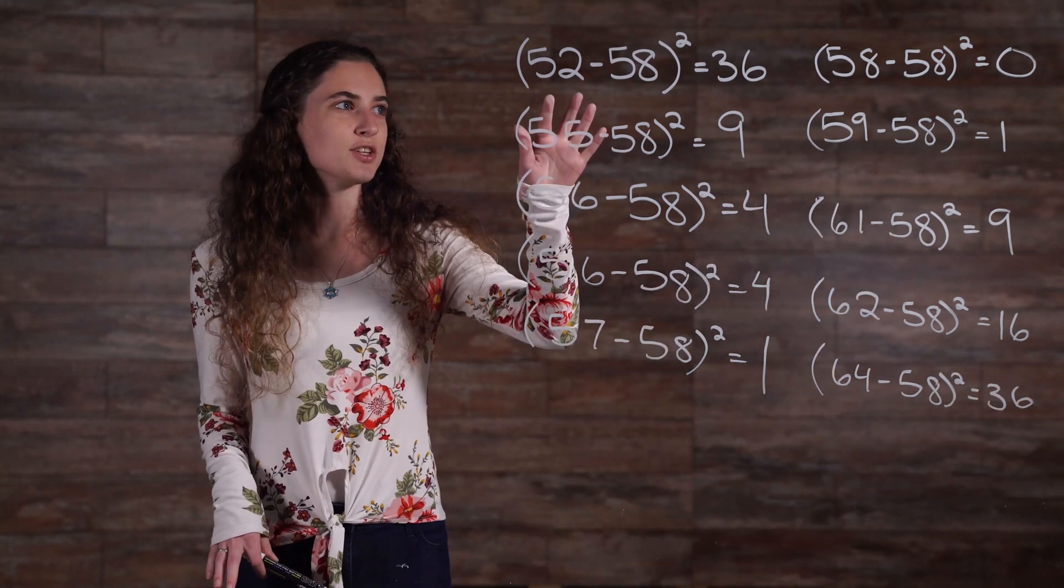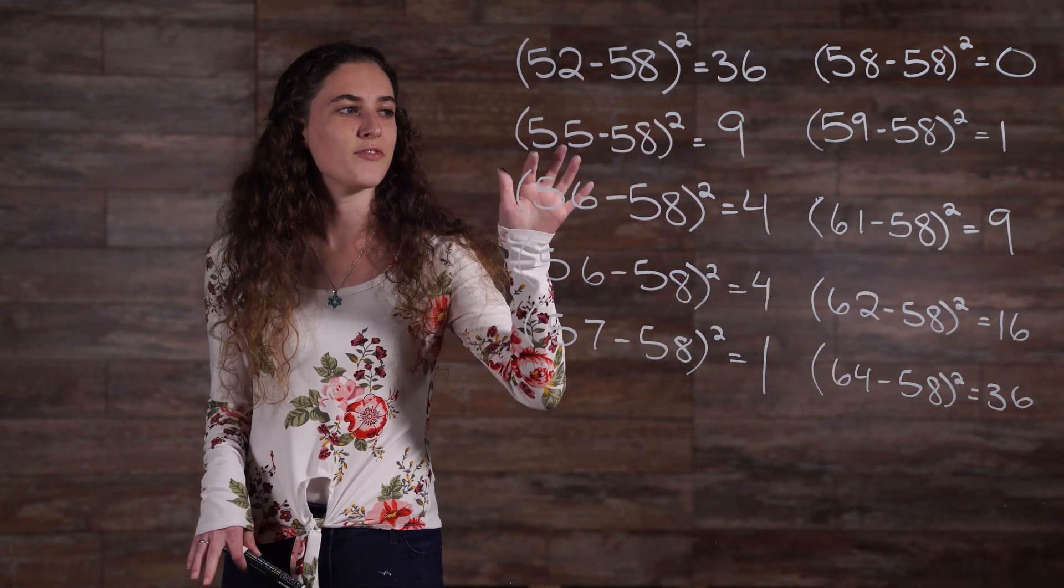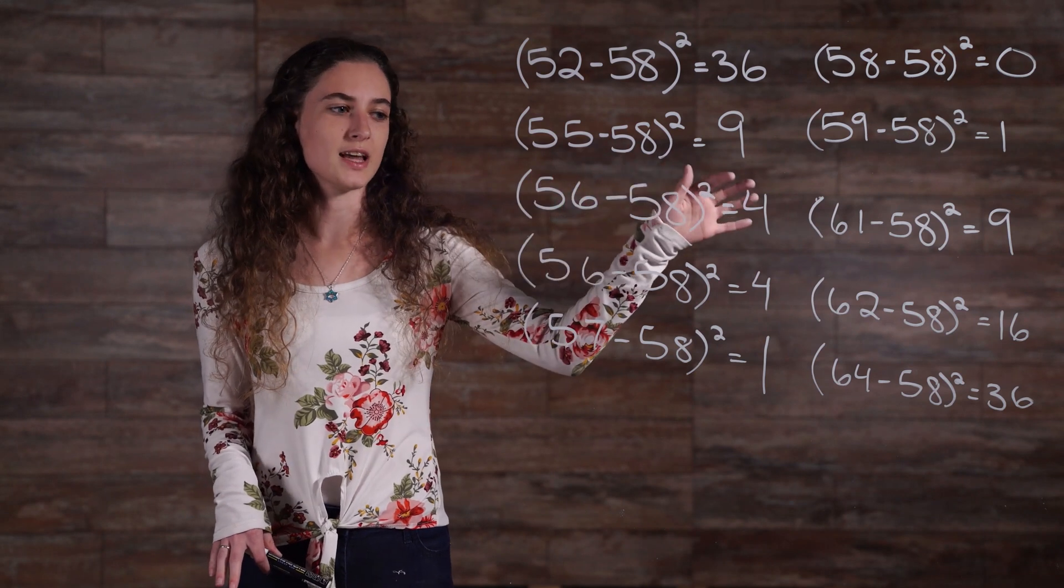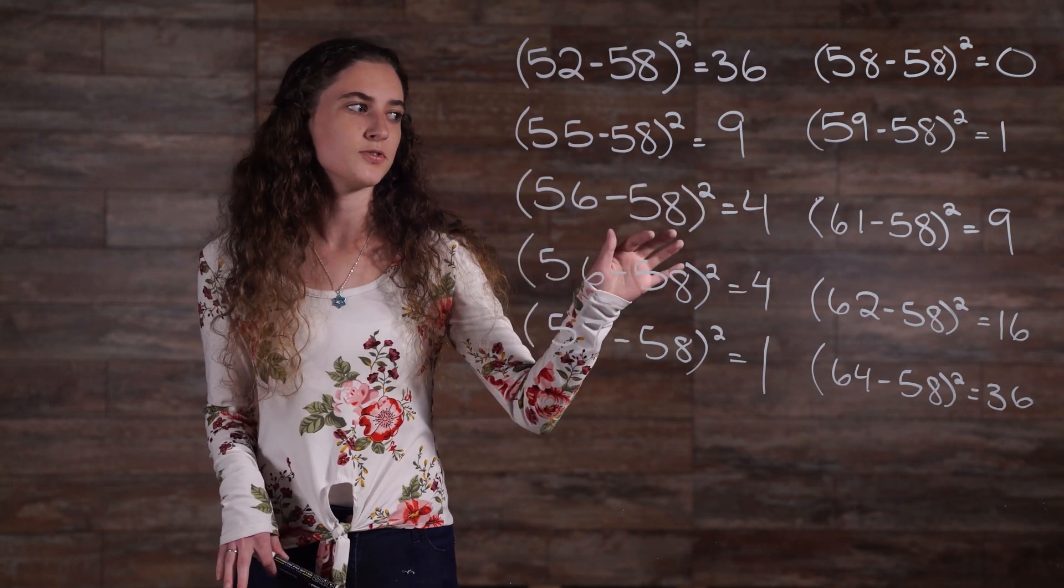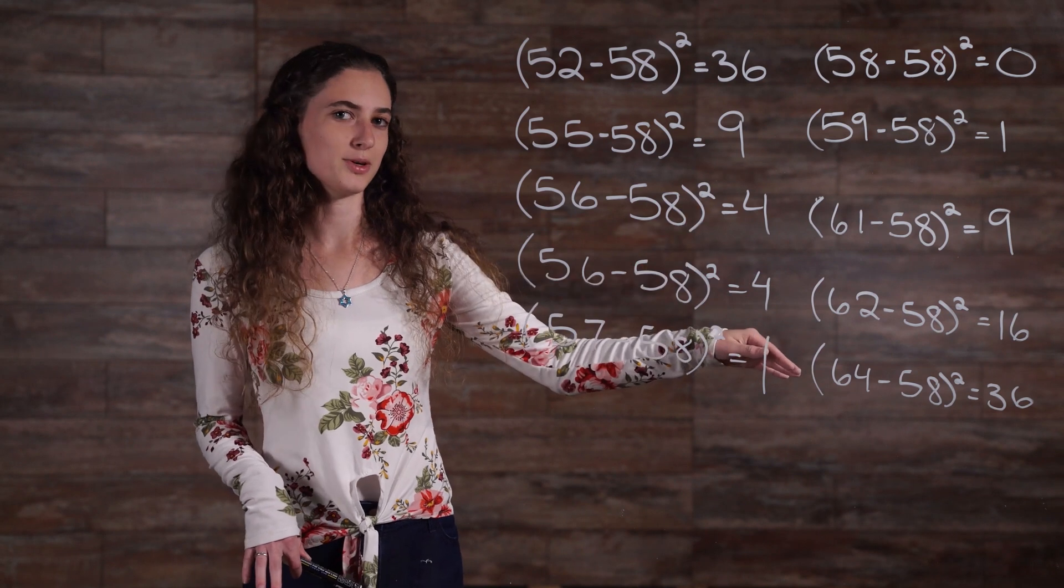So, 52 minus 58 squared is 36, 55 minus 58 squared is 9, 56 minus 58 squared is 4, and so on through the rest of your numbers.